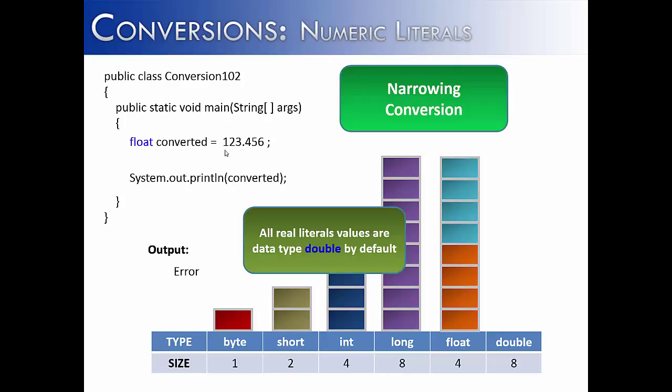There is a way around this, though. Instead of typecasting, what we can do is we can add an F to the end of the value, and you can probably guess what it's doing. So just like adding an L to an integer literal makes it a long literal, adding an F changes it from a double literal into a float literal.